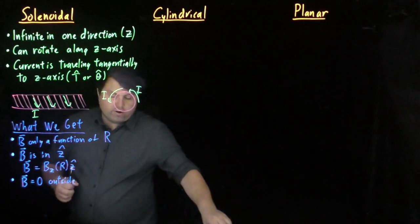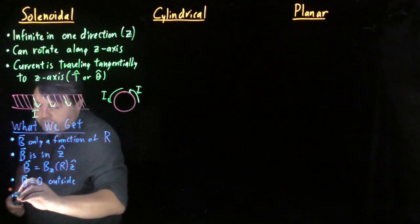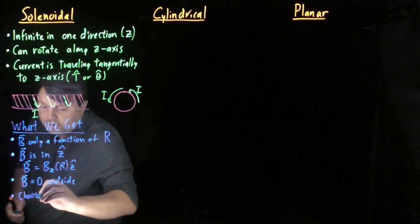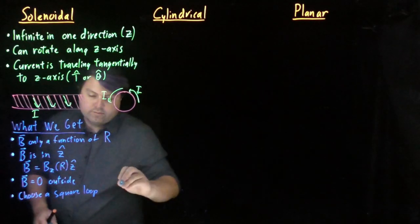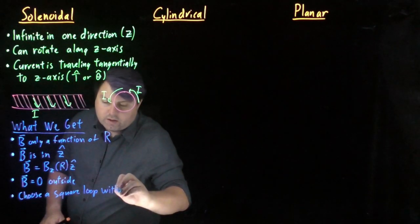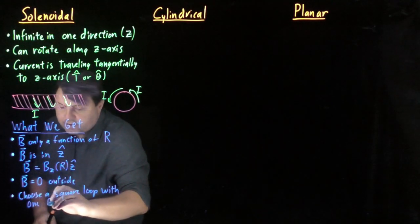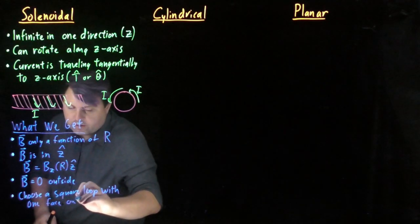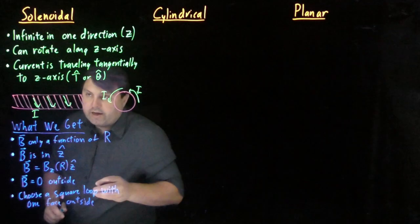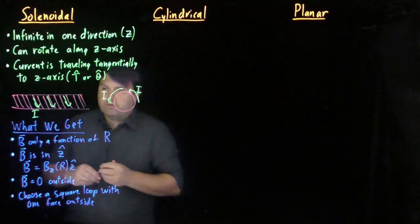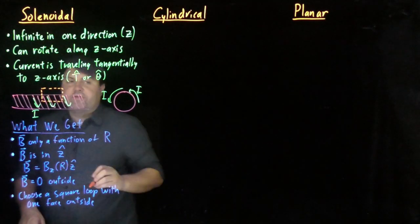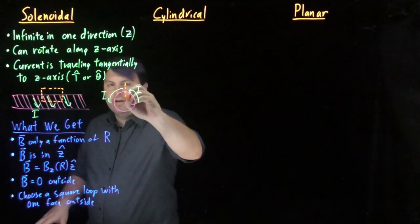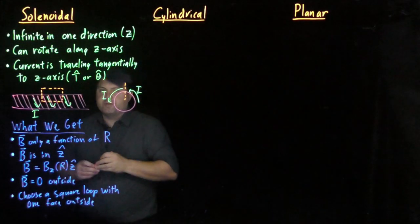Lastly, for our Amperian loop, we choose a square loop with one face outside. So our square loop might look like this from this perspective and would look like this from this perspective.